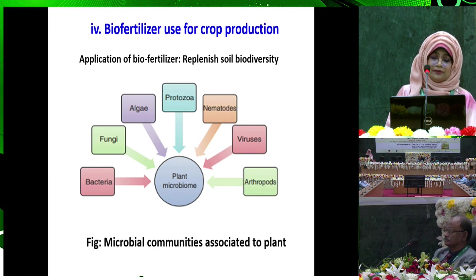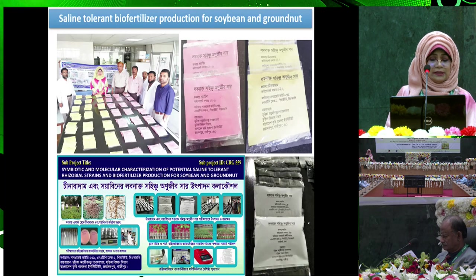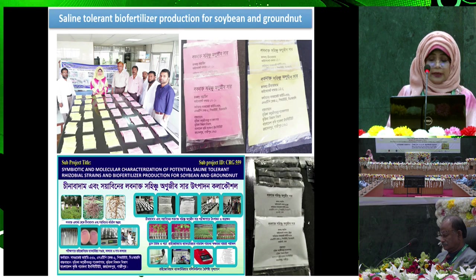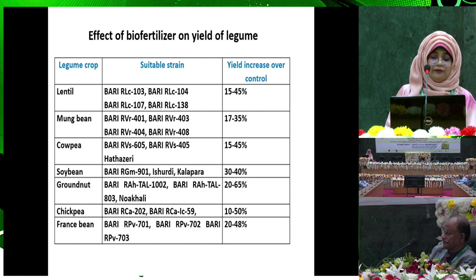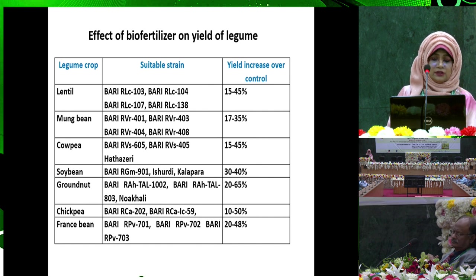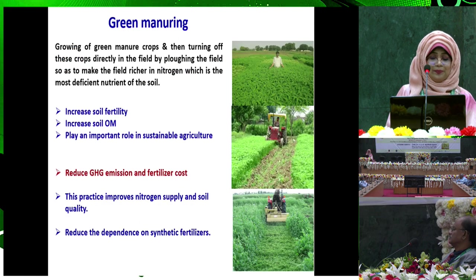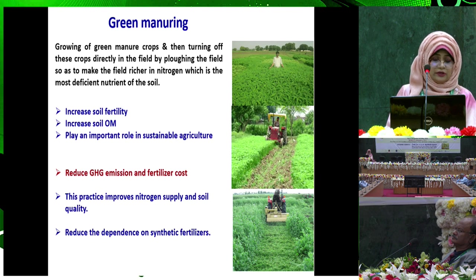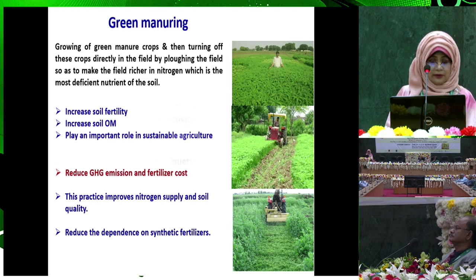Biofertilizer is used for replenishing soil biodiversity. BARI's microbiology section produced salt-tolerant biofertilizer for soybean, groundnut, and many more crops. About 10 to 65 percent yield increase over control was observed in different legume crops using suitable strains of biofertilizer. Green manure involves growing green manure crops and turning them directly into the field by plowing, making the field richer in nitrogen — the most efficient nutrient for the soil. It increases soil fertility, organic matter, and reduces GHG emission and fertilizer cost.